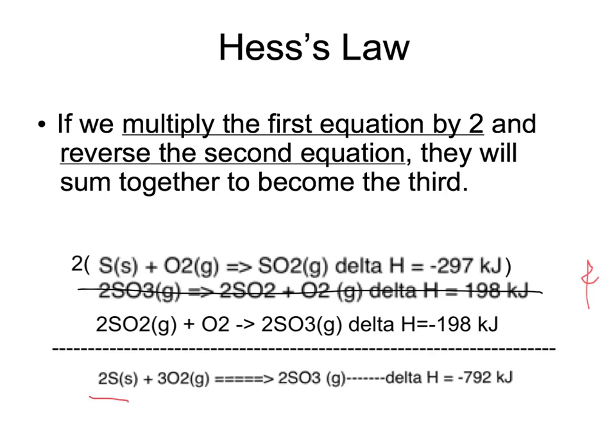So now all I have to do is make sure that I have everything I need. So I have two sulfurs. And here, when I multiply this out, I get two sulfurs plus two oxygens gives me two sulfur dioxides. And then my delta H is also multiplied by two.